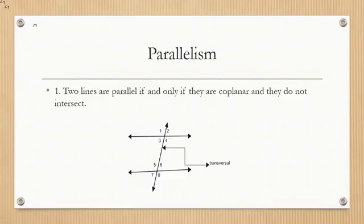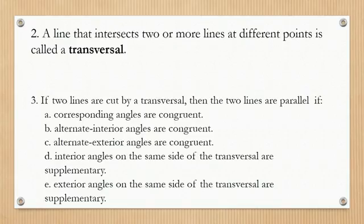Parallelism: Two lines are parallel if and only if they are coplanar and they do not intersect. A line that intersects two or more lines at different points is called a transversal. If two lines are cut by a transversal, then the two lines are parallel if: